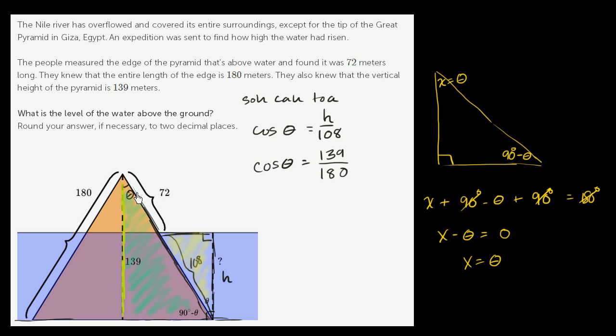And these thetas are the same theta. So now we have cosine of theta is h over 108, and cosine of theta is 139 over 180. Or we could say that h over 108 is equal to 139 over 180. Both of these things are equal to cosine of theta. Now to solve for h, we just multiply both sides by 108.